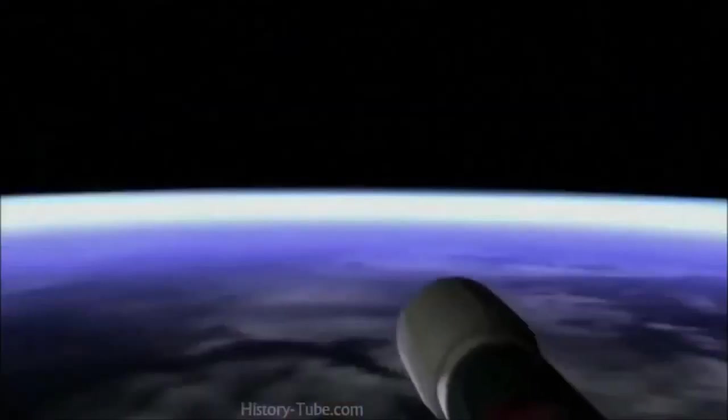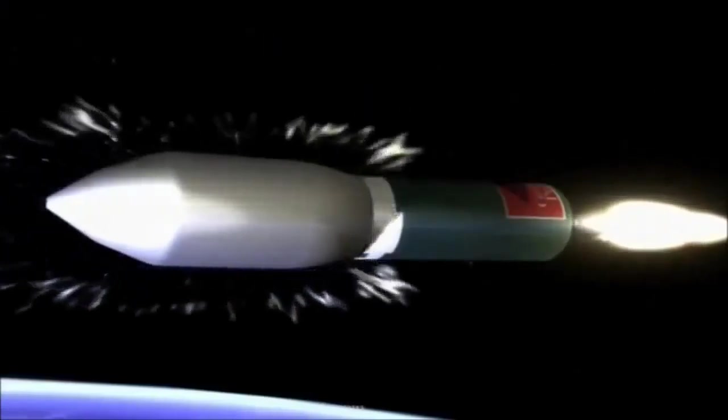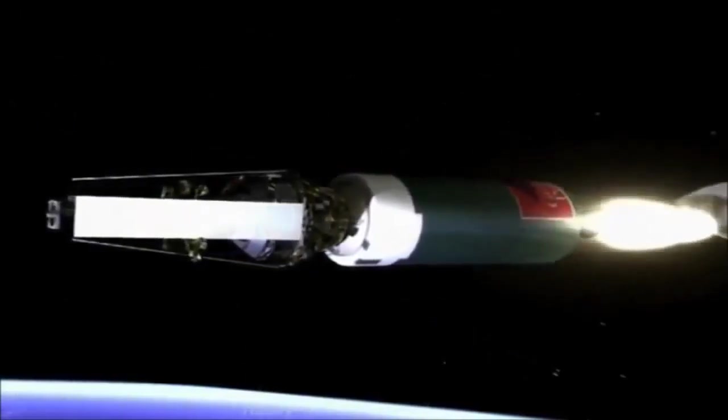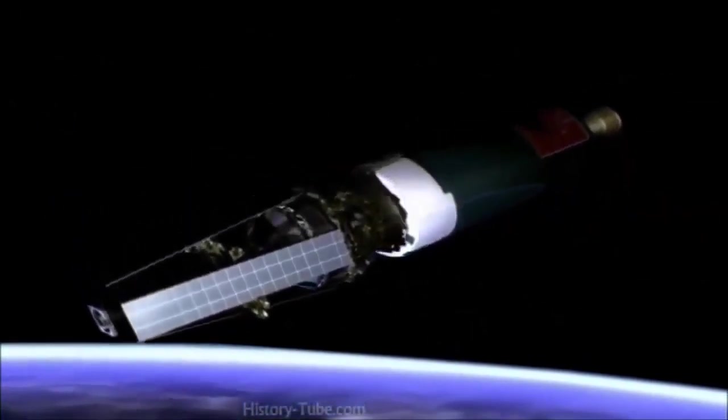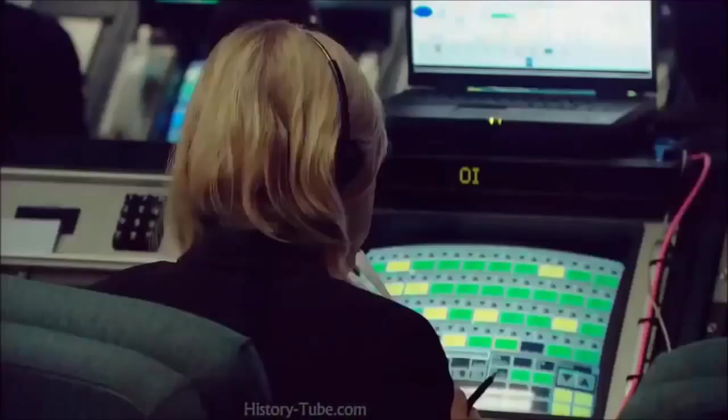For over a year, Gravity Probe B orbited the Earth while the team nervously monitored its every move, trying to see if the Earth would actually twist space. Finally, the data began to trickle in. And there was a problem. The gyroscopes were experiencing a tiny, unexpected wobble.